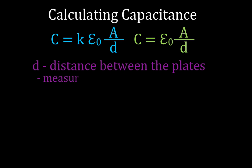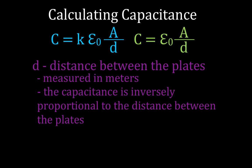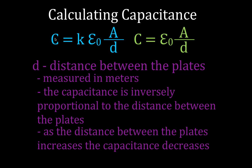D is the distance between the plates, measured in meters. D is in the denominator of the fraction, so as D increases the capacitance decreases — the capacitance is inversely proportional to the distance between the plates. As the distance increases the capacitance decreases; as the plates get closer together, the distance goes down and the capacitance increases.